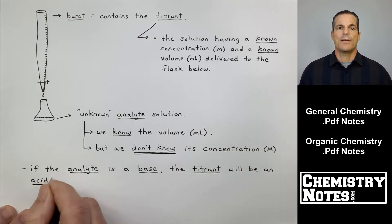And then we use the acid to find out the concentration of the base, or we use the known base to find out the molarity of the acid or vice versa. And it says that right here, see that tick mark down there? If the analyte is a base, the titrant will be an acid or vice versa.